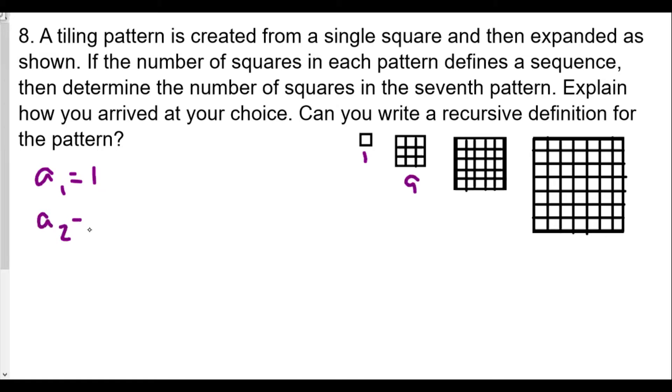So a2 is nine. The next one has a five by five so it's twenty five, so a3 equals twenty five. And the fourth one looks like one two three four five six seven by seven, that's going to be 49.